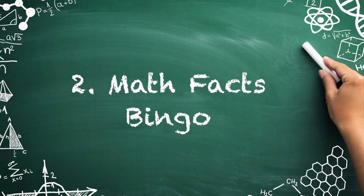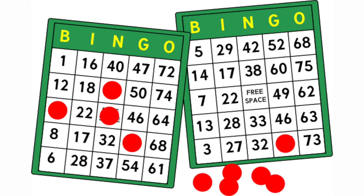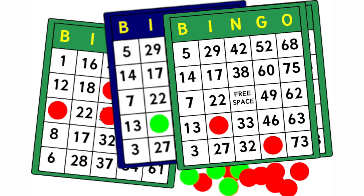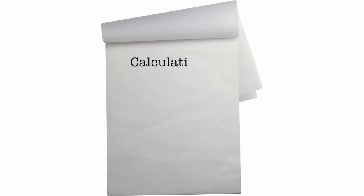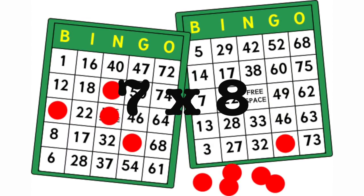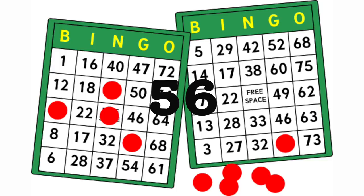Number two: math facts bingo. Make fact fluency drills engaging by playing this version of bingo. First, create bingo cards that contain answers to different multiplication tables. Second, hand them out to students and make sure they have a separate sheet for calculations. Finally, instead of calling numbers, state equations such as seven times eight. After determining the product is 56, they can check off the number if it's on their cards.